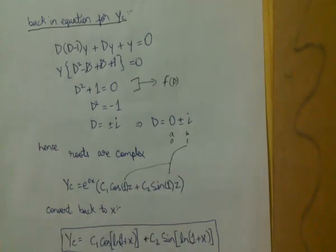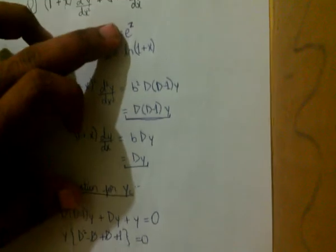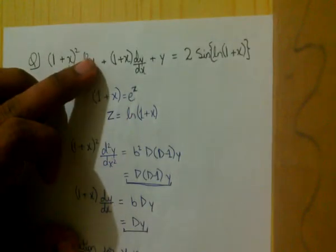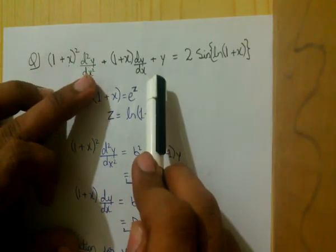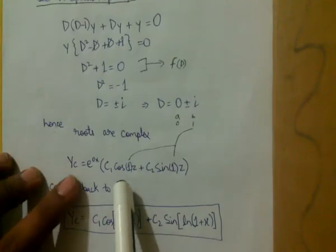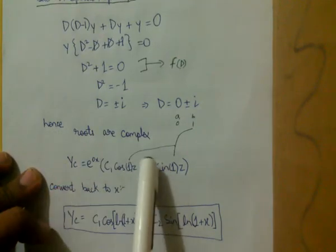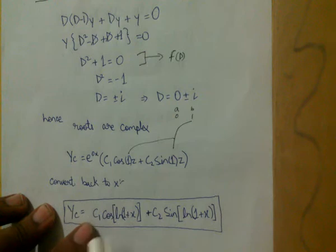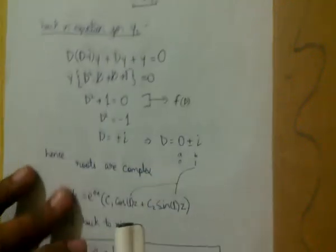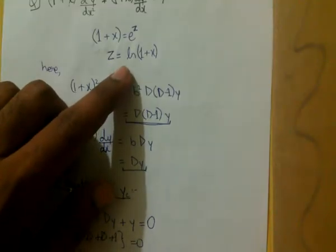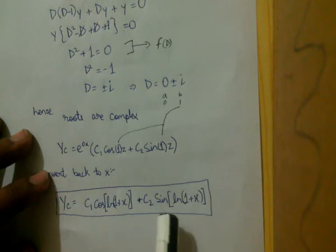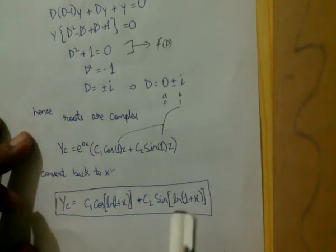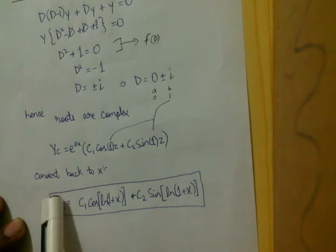We solved this equation in terms of z, but the question requires the answer in terms of x. Converting back: e⁰ = 1, and z = ln(1 + x). Therefore yc = c1·cos(ln(1 + x)) + c2·sin(ln(1 + x)). We have found the complementary function yc.